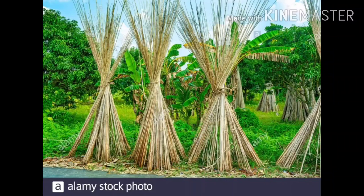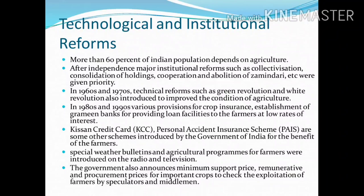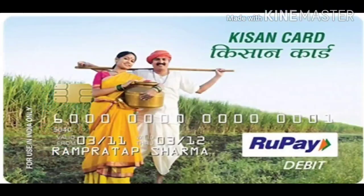Now let us see the technological and institutional reforms. More than 60% of the Indian population depends on agriculture. After independence, major institutional reforms such as collectivization, consolidation of holdings, cooperation, and abolition of zamindari were given priority. In the 1960s and 1970s, technical reforms such as the Green Revolution and White Revolution were also introduced to improve agricultural conditions. In the 1980s and 1990s, various provisions for crop insurance, establishment of Grameen banks for providing loans to farmers at low rates of interest, Kisan credit card, and personal accident insurance schemes were introduced. Special weather bulletins and agricultural programs for farmers were also introduced on radio and television. The government also announced minimum support price, remunerative and procurement prices for important crops to check the exploitation of farmers by speculators and middlemen.